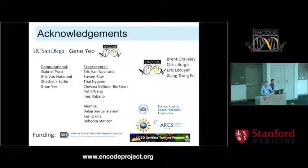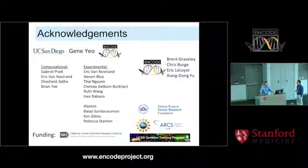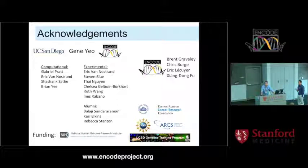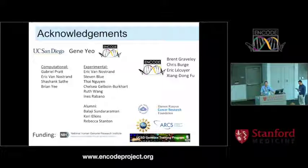Question: How are you defining repetitive elements, and do you throw that data away or keep it? Answer: We define repetitive elements as anything in RepBase plus the full ribosomal RNA transcript, which is not in RepBase but has a lot of reads. We have built another pipeline to deal with those - it's a complex mapping issue because you want to map to families of RNAs, not just individual ones. We're still working out the kinks and figuring out the best way to make that available. We already see RBPs that bind to Alus and LINE elements that are very interesting.